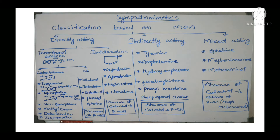Under non-catecholamines we have salbutamol, terbutaline, bitolterol, and phenylephrine. They have a beta-hydroxy group but no catechol ring. Another class is imidazolines: oxymetazoline, xylometazoline, naphazoline, and clonidine. These have neither a catechol ring nor a beta-hydroxy group.